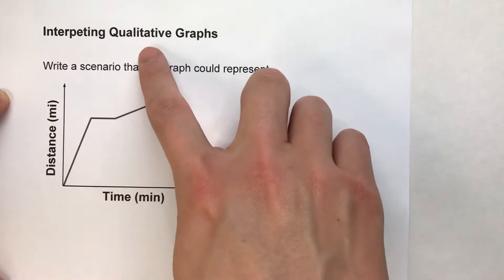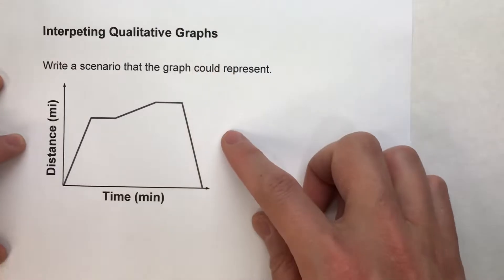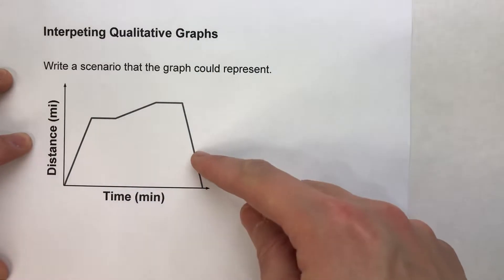So today we are interpreting qualitative graphs. Now a qualitative graph is a graph that doesn't necessarily have any numbers on it, kind of like this one.